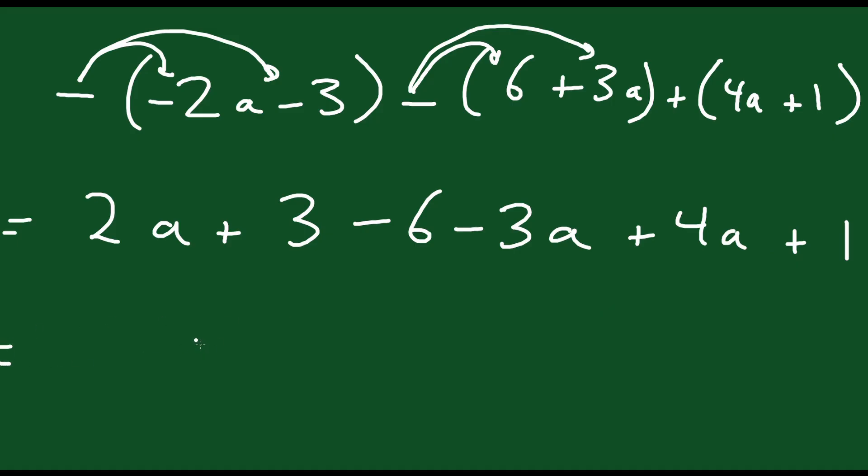And then you can go ahead and collect your like terms. So 2a minus 3a plus 4a. So 2 minus 3 is negative 1. Negative 1 plus 4 is going to be 3a. Now for your constants. Your 3 minus 6 plus 1. Well 3 minus 6 is negative 3. Negative 3 plus 1 is negative 2. So your final answer is 3a minus 2.